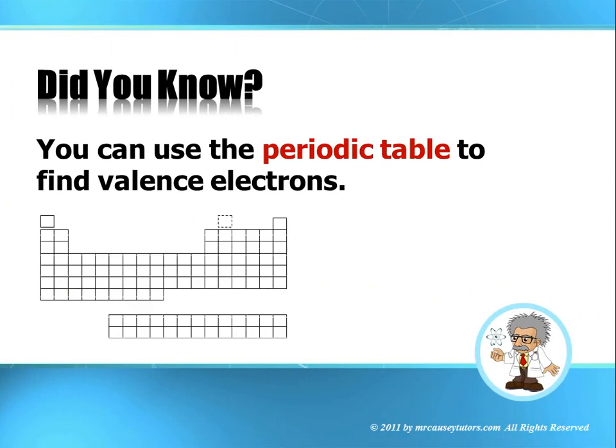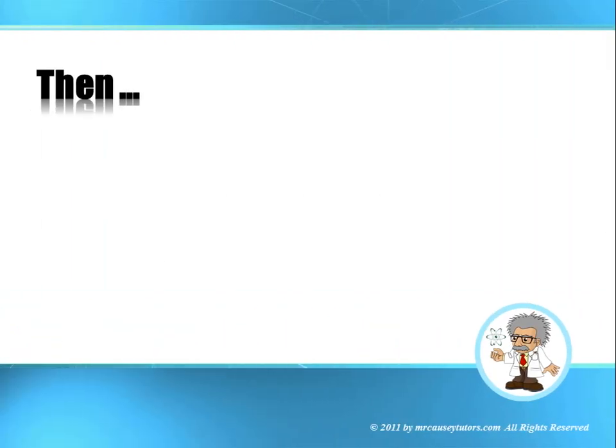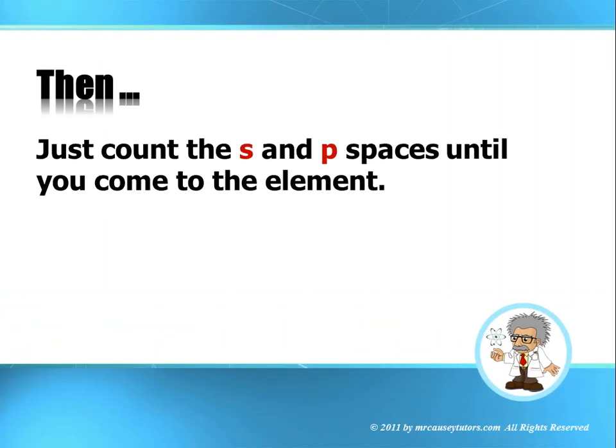Did you know you can use the periodic table to find your valence electrons? First, find the row the element is in. Then, just count the S and P spaces until you come to the element. That's it. Watch.